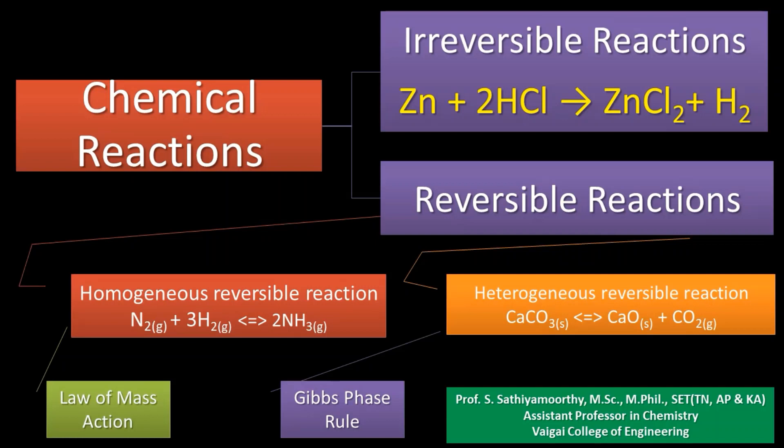To understand phase rule better we should know the basic principle behind it. Chemical reactions are classified into two main types: irreversible and reversible. Irreversible chemical reactions take place only in the forward direction and will not take place in the reverse or backward direction. For example, zinc upon addition with HCl produces zinc chloride and hydrogen — the hydrogen escapes and the reaction is not reversible in nature.